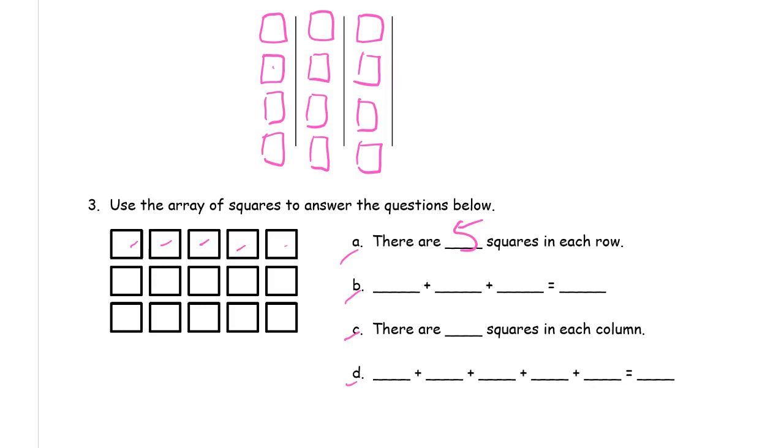And there's 3 rows, so that's 3 5s. 5, 10, 15. How many squares are in each column? There's 1, 2, 3 in each column. And then that means we're going to have 5 3s. And it's still going to equal 15, because it's the same array. So whether you're looking at rows or columns, it's going to total 15 squares.